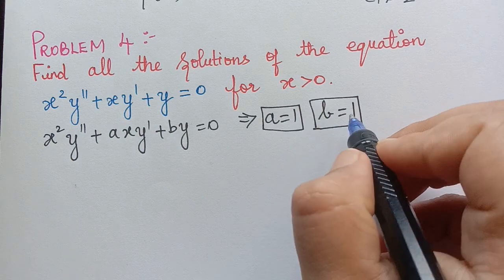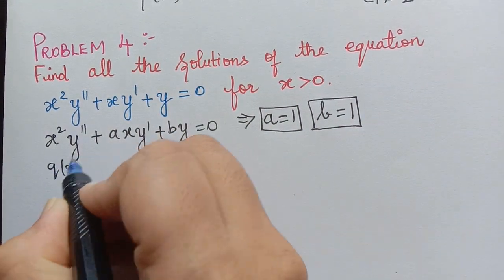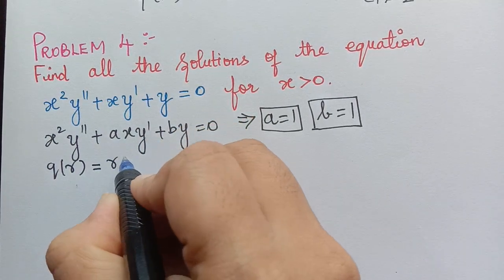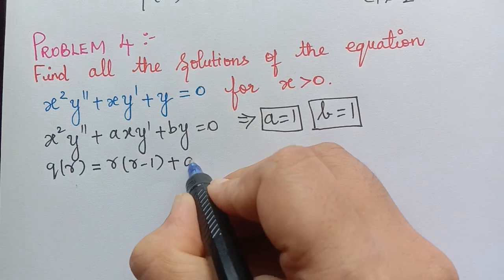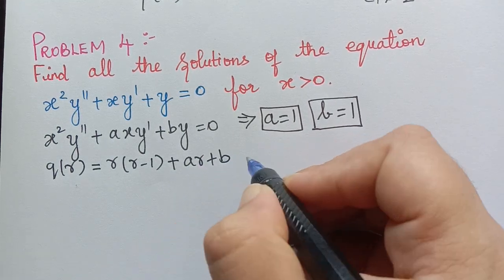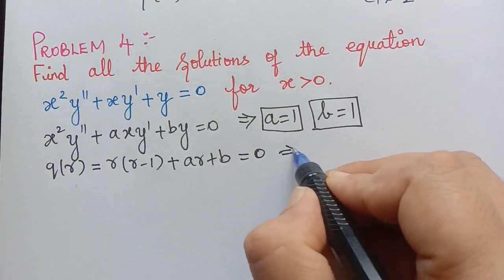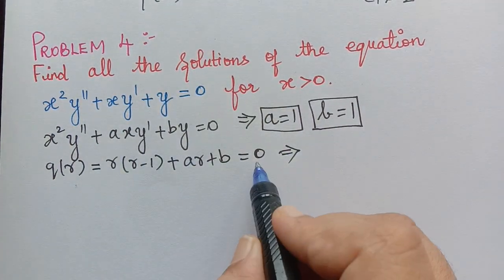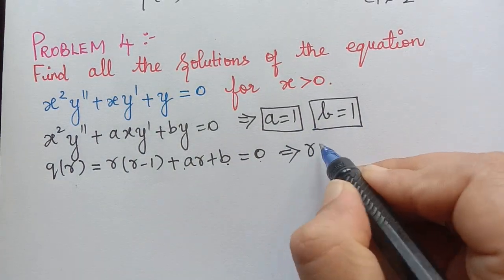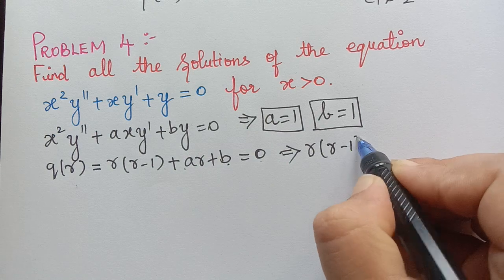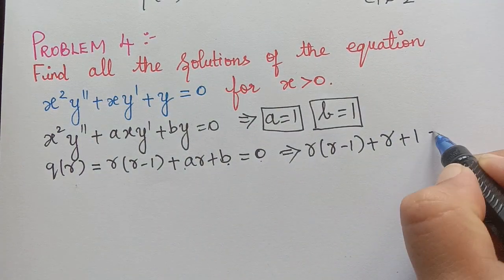After finding the values of a and b, we substitute them in the indicial polynomial q(r) = r(r−1) + a·r + b = 0. To find the roots we equate q(r) = 0. Substituting a = 1 and b = 1, we obtain r(r−1) + r + 1 = 0.